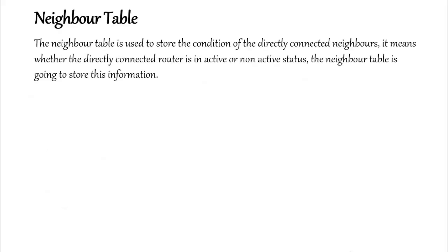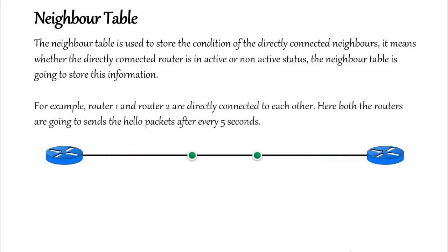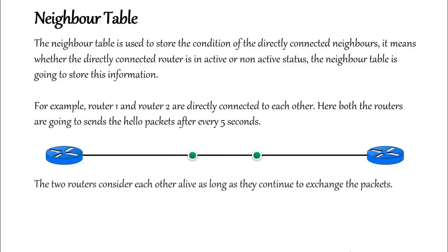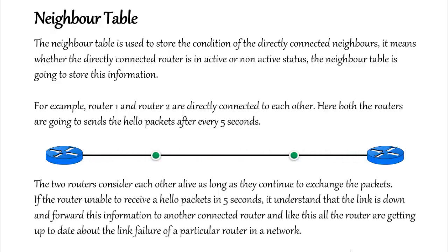The neighbor table is used to store the conditions of directly connected neighbors — whether the directly connected router is in active or non-active status. For example, Router 1 and Router 2 are directly connected to each other. Both routers send hello packets every 5 seconds. They consider each other alive as long as they continue to exchange packets. If a router is unable to receive a hello packet within 5 seconds, it understands that the link is down and forwards this information to other connected routers, keeping all routers updated about the link failure.